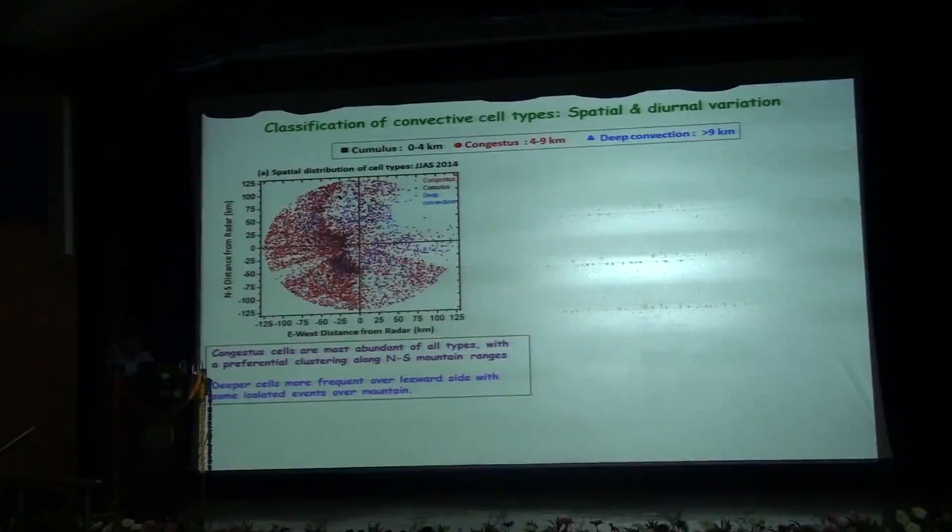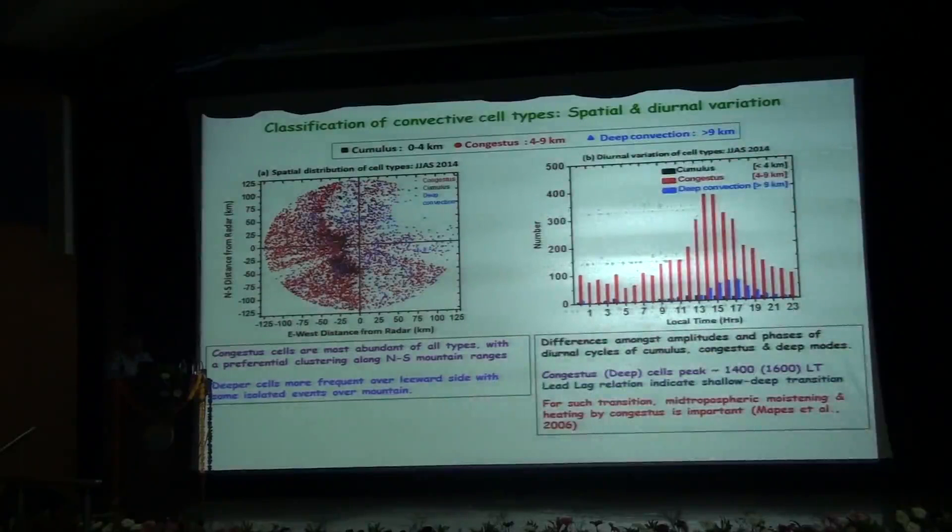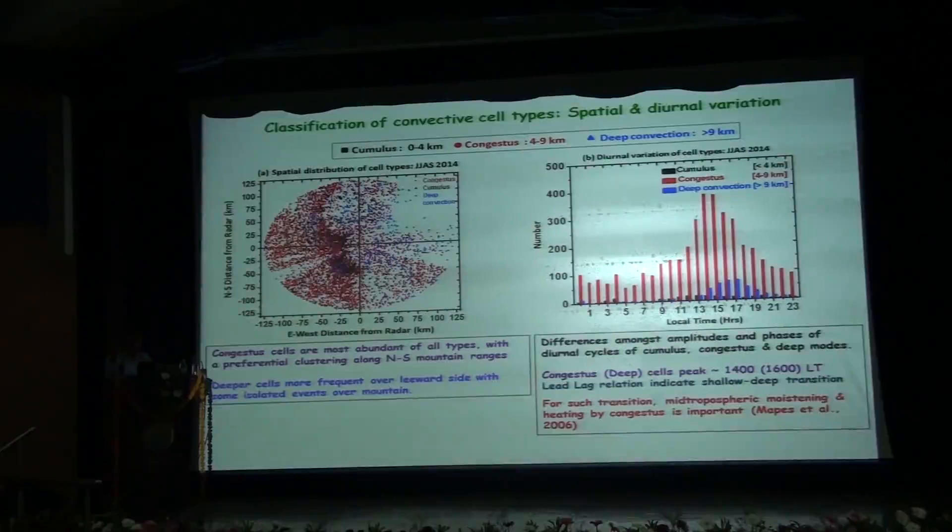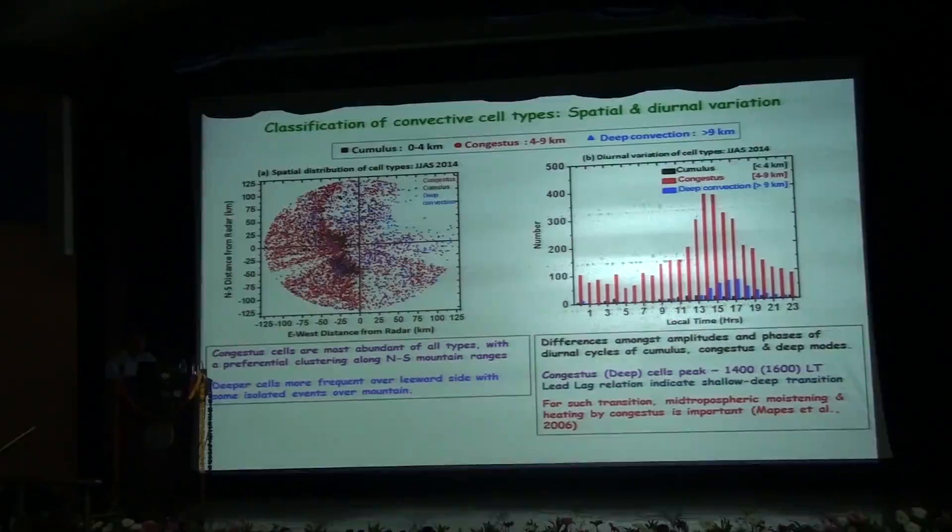We now look into the diurnal variation of different cell types and we see that there are differences among the amplitude and phases of the three different types, the cumulus, congestus and the deep. The congestus cells peak at around 14 hours and the deep cells peak at around 16 hours. This lead-lag relationship indicates a shallow to deep transition. For such transitions to occur, the tropospheric moistening and heating by congestus is one of the important factors.